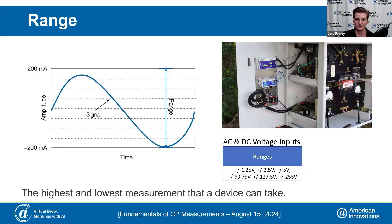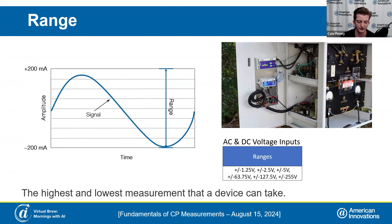The first one we're going to talk about is range. Range is the highest and lowest measurement that any measurement device can capture. On the left I have a simple waveform with a signal of plus or minus 200 milliamps as the highest and lowest measurement — that would be your range. Looking at the specs for the RM510, our remote monitor for a rectifier, you'll see that range can vary for DC and AC current. On a DVM, you'll probably encounter a plus or minus 250 volts or greater, and on a rectifier monitor, all the way up to almost 300 volts.